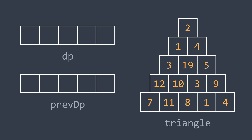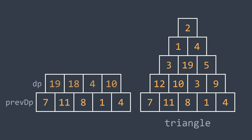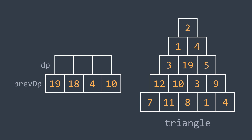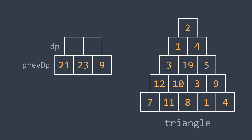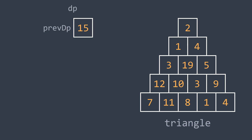Let's see how to get the result using only 2 rows. We fill the last row from triangle, then for the level above, prev_dp becomes dp and dp becomes a new empty row. We get 19, 18, 4, 10. Same manipulation again — prev_dp becomes dp, dp becomes a new empty row — giving 21, 23, 9. Continuing: prev_dp becomes dp, dp is new, giving 22 and 13. Finally dp gets 15, then prev_dp becomes dp. Now i is negative, the loop stops, and the value we're searching for is in prev_dp[0].